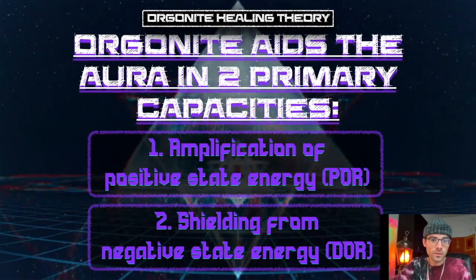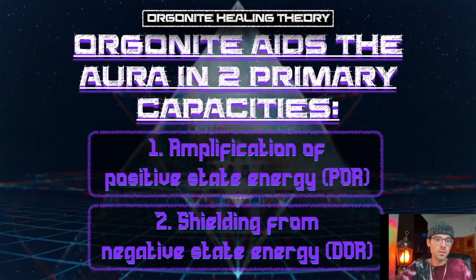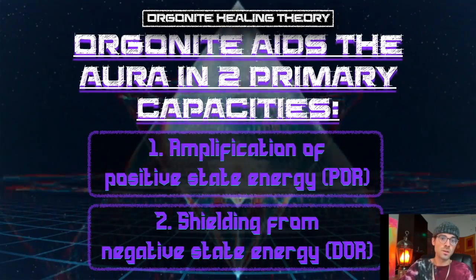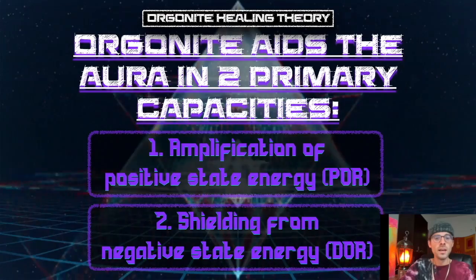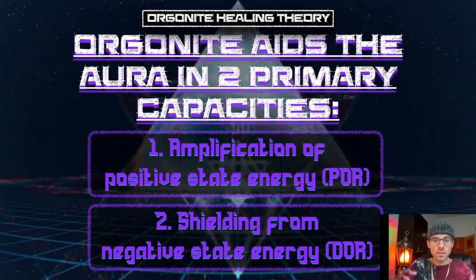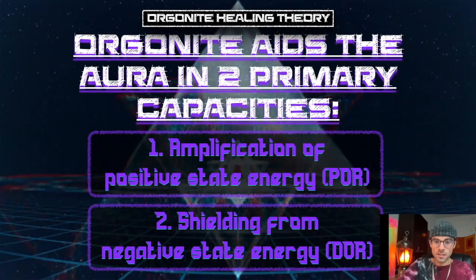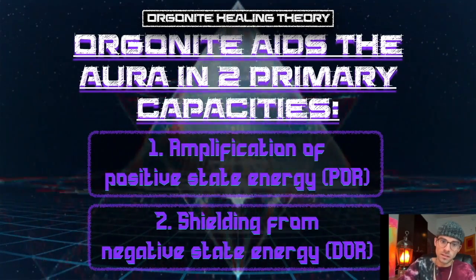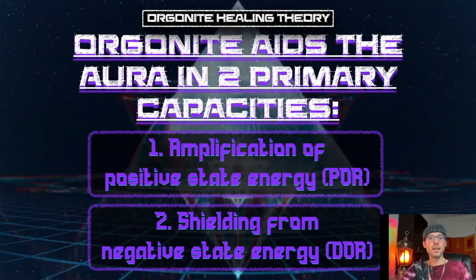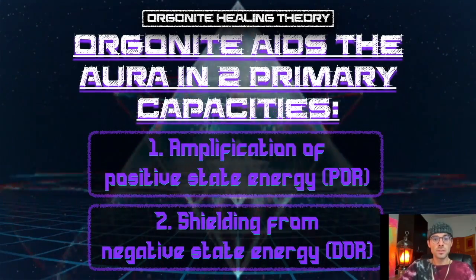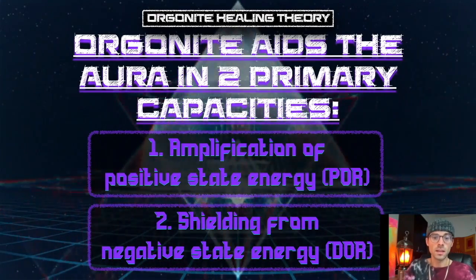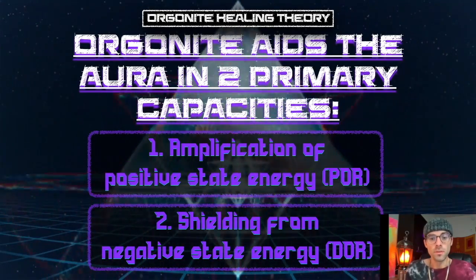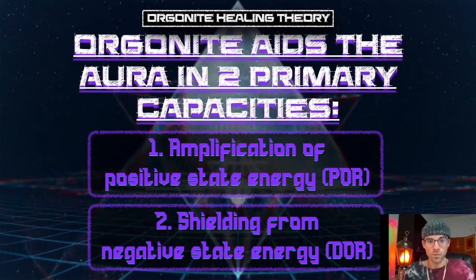In general, the two primary functions of Orgonite are, number one, the amplification of positive state energy — so this would be like love, unity consciousness — and shielding from negative state energy, which is an energy derived of fear or separation.